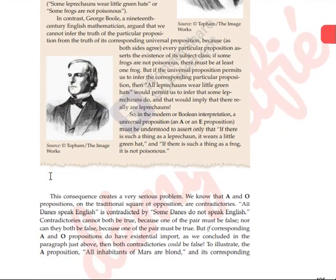Let's write the definition once again. According to Boolean Interpretation, when the subject is empty, it is difficult to know truth and falsity. When the subject is empty, A and E can be true together and are not contraries. I and O can be false together and are not subcontraries. Also, A and I, and E and O, are not subaltern to each other. So only the relation between the contradictories is sustainable.